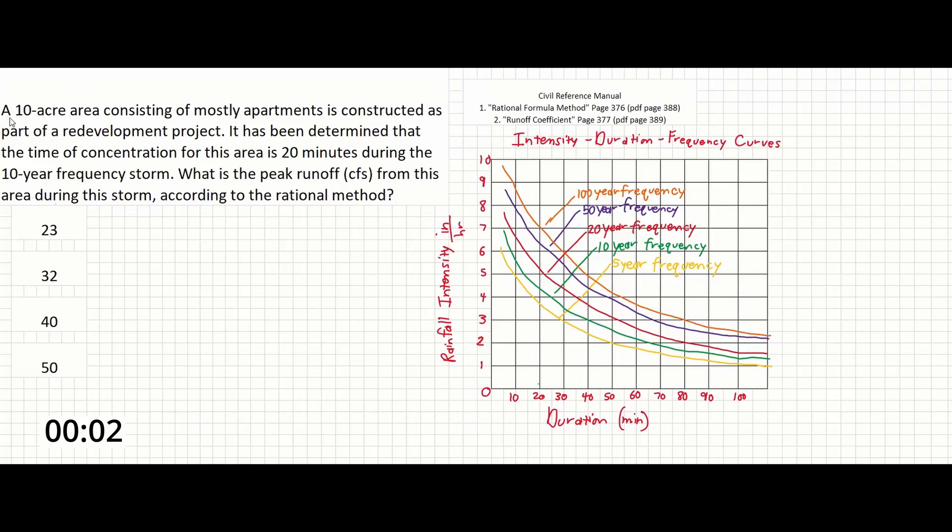Okay guys, in this problem, a 10-acre area consisting of mostly apartments is constructed as part of a redevelopment project. It has been determined that the time of concentration for this area is 20 minutes during the 10-year frequency storm. What is the peak runoff in CFS from this area during this storm according to the rational method?